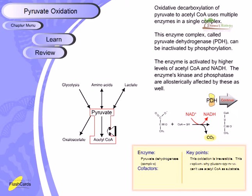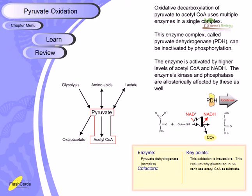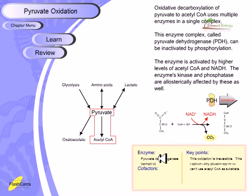This enzyme complex can be regulated both by allosteric regulation and covalent modification. In this reaction, coenzyme A is attached, NAD is converted to NADH, and carbon dioxide is released — because it is oxidative decarboxylation. Finally, acetyl-CoA is produced. The pyruvate dehydrogenase complex is actually made up of three different enzymes sitting one after another, performing complementary jobs.